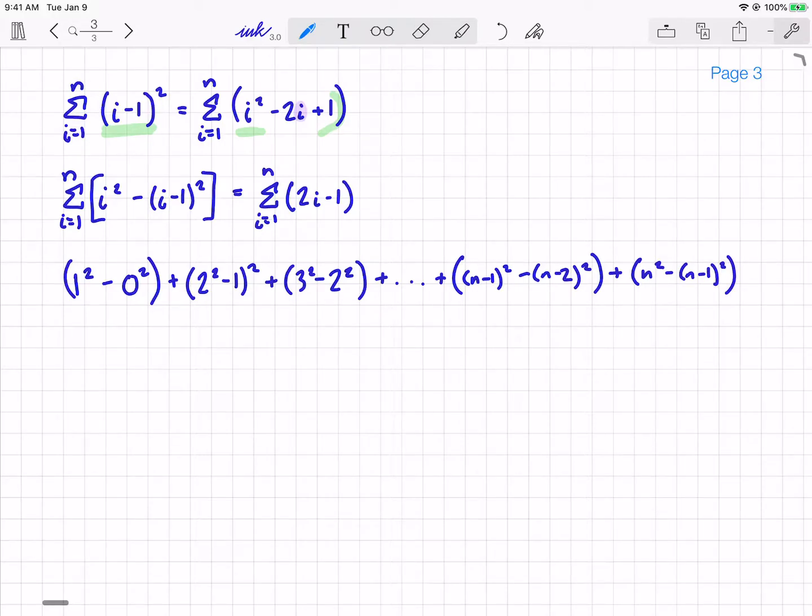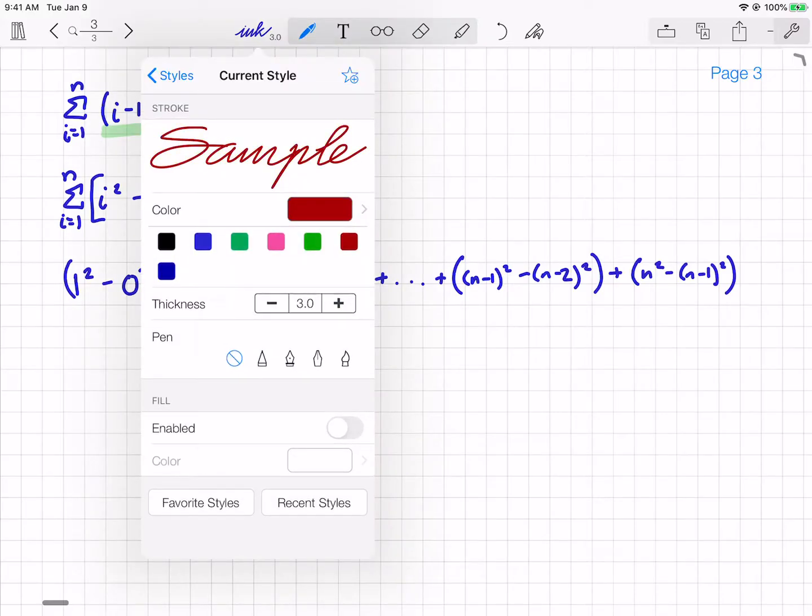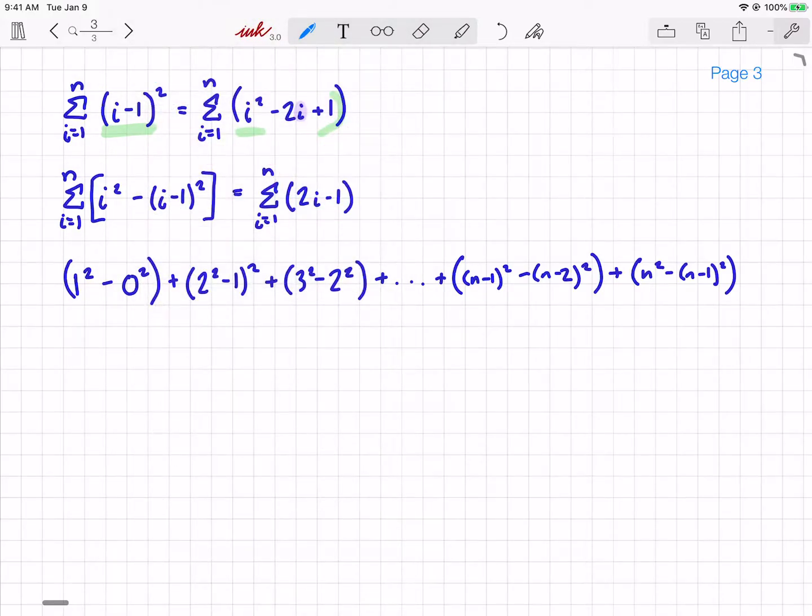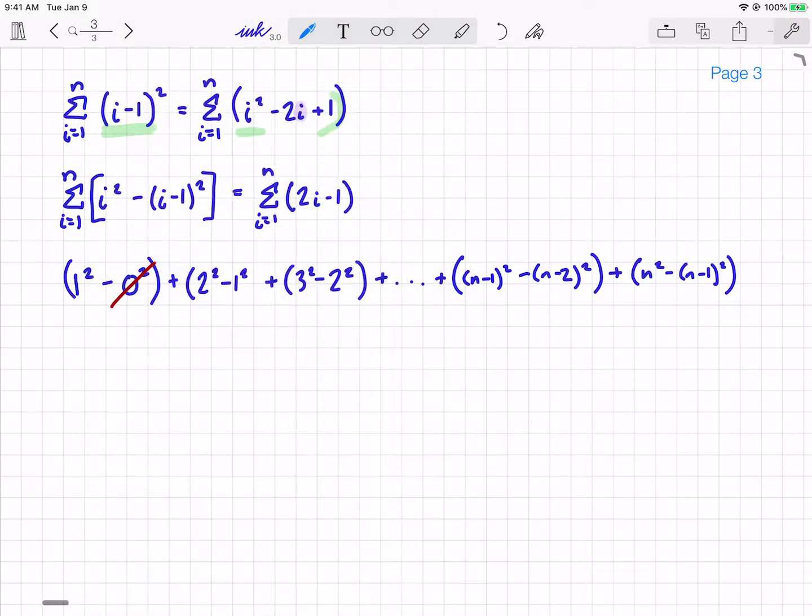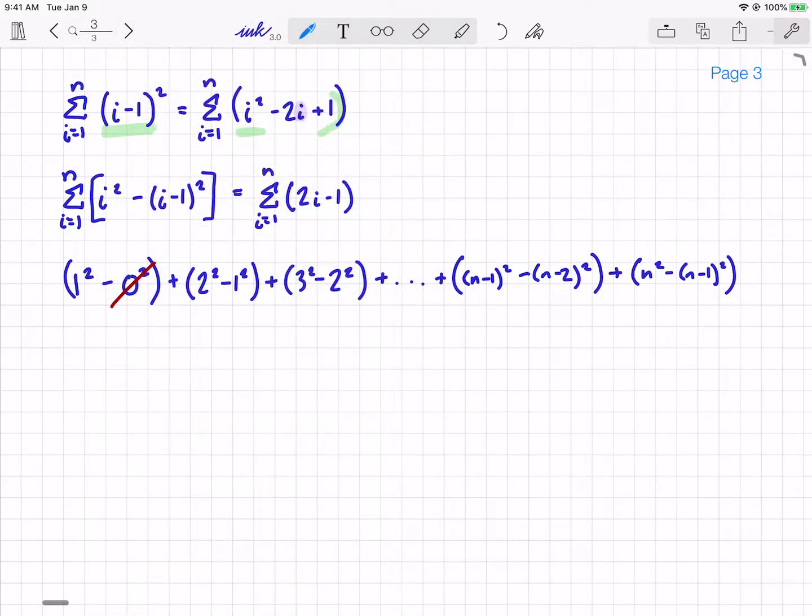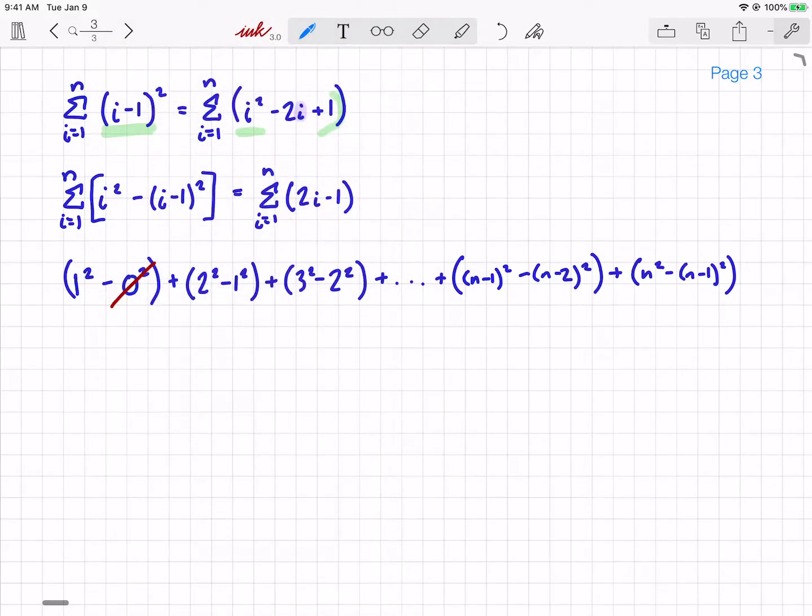So if I add all these things up, what you will notice is that as you go along, 0 squared is nothing. And I've got a little mistake here. Some of you probably caught this. That should have said 1 squared right there. So as I move along, the 0 squared is 0. This 1 squared minus this 1 squared is gone. This 2 squared minus this 2 squared is gone. And what you'll notice is that as I go along, the only thing that will remain is that n squared term.